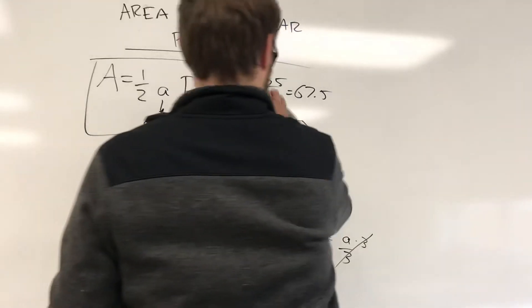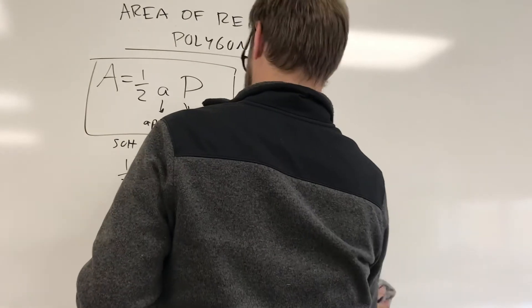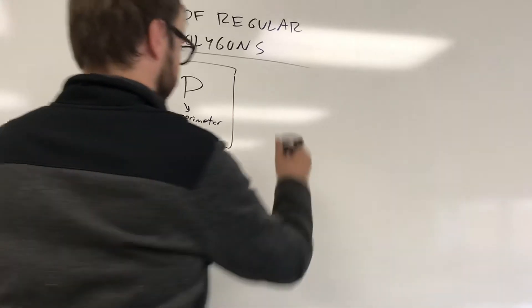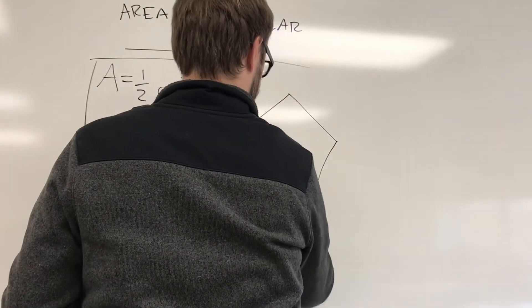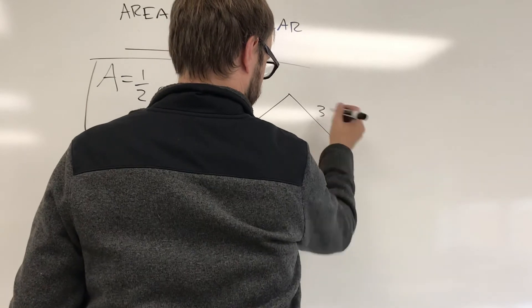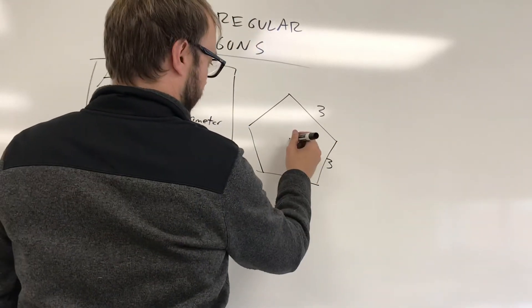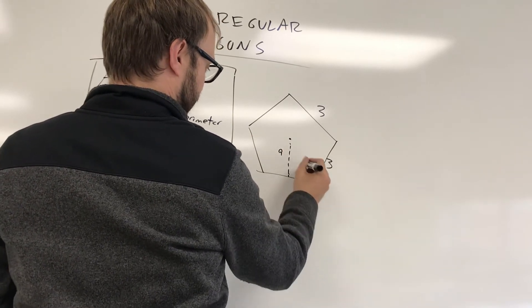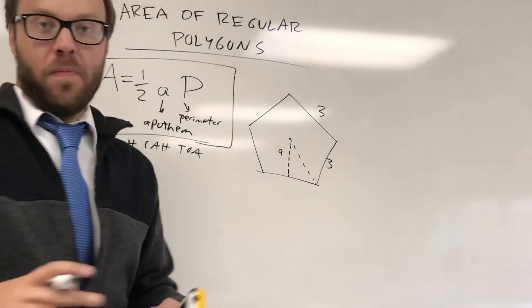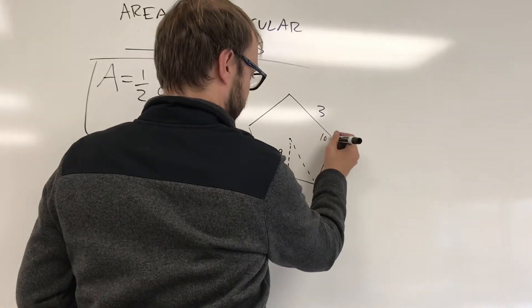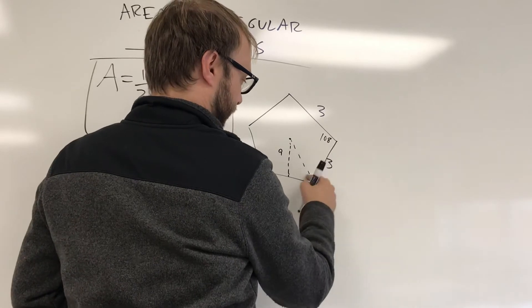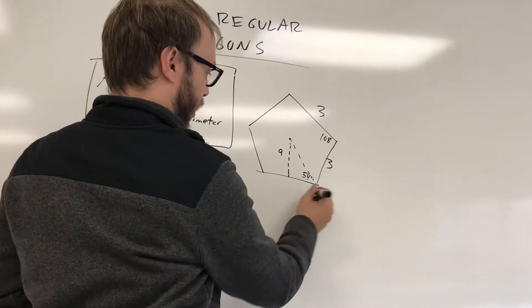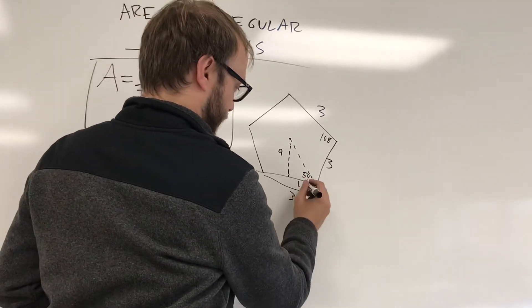Let's do one more — let's go back to a pentagon. I know I've done a pentagon in a previous video, but I don't think I did it with this formula. Let's say the pentagon has side lengths of three. I need the apothem length. Remember that pentagons have 108-degree angles. So 108 divided by two gives a 54-degree angle on the inside. If this whole side is three, this half-length is 1.5.